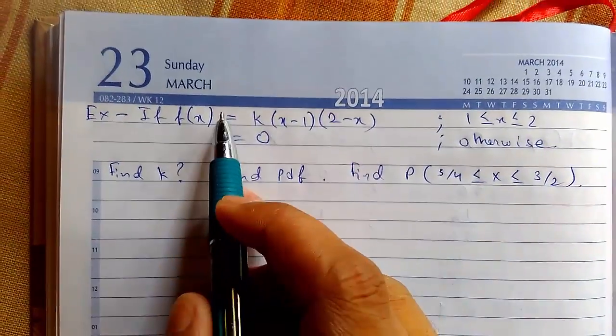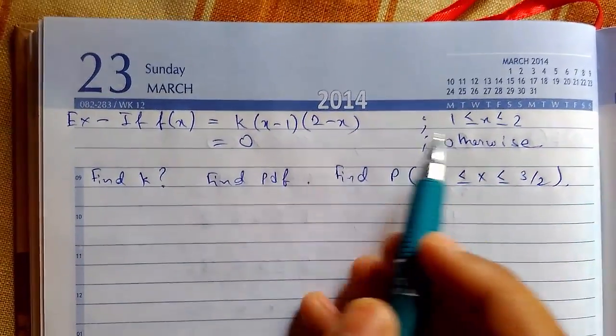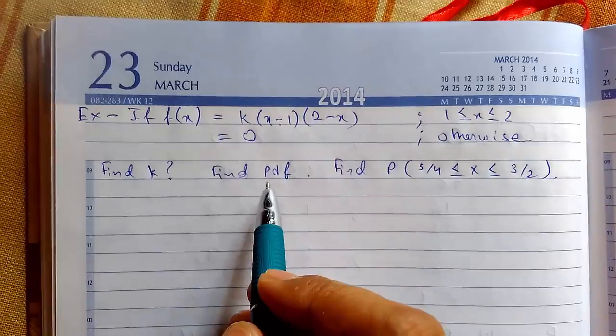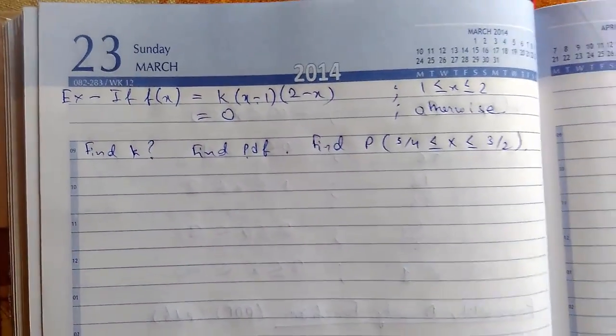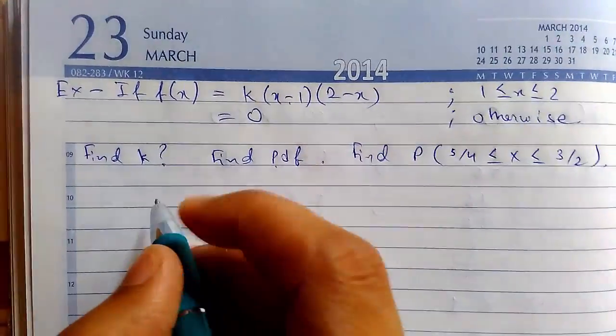Now let us solve this problem. Suppose f of x is this and we need to find the value of k. We need to find the PDF and we need to find this probability of value also. So let us start.